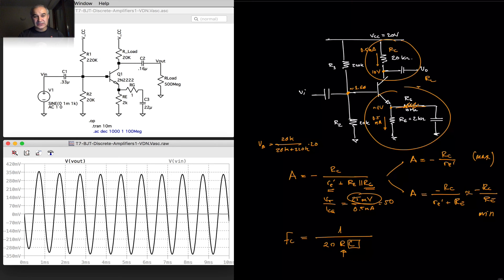But notice, if we do a 10% sweep, it will change significantly because we are not swamping the Re, the emitter, the small signal base emitter junction resistor, which is temperature-dependent, because VT is temperature-dependent.